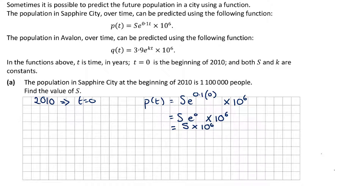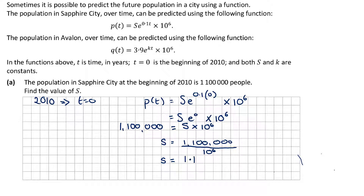We're told the actual population is 1.1 million, so S / 10^6 = 1,100,000. To get S, divide 1,100,000 by 10^6. Since 10^6 has six zeros, we end up with S = 1.1. That is our value of S, and it's really important because it's a constant we'll need for the rest of the question.